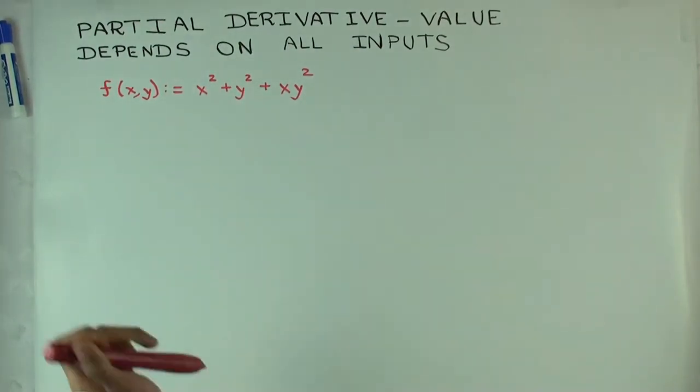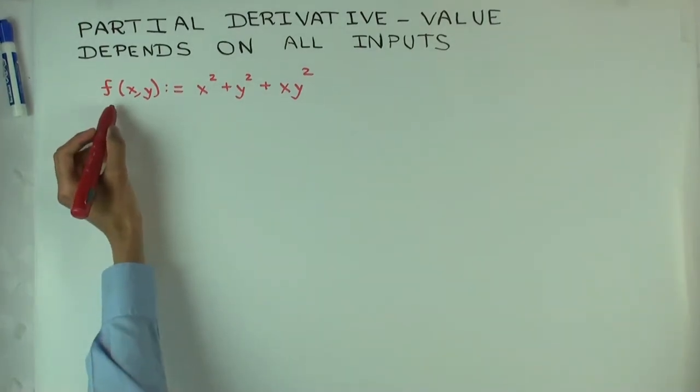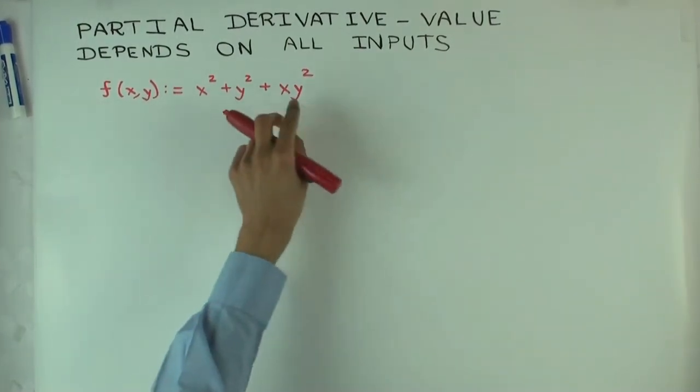Let's take an example, and then I'll explain the general idea in more detail. Let's look at this function. It's a function of two variables, x and y, given by this expression.